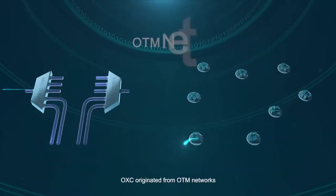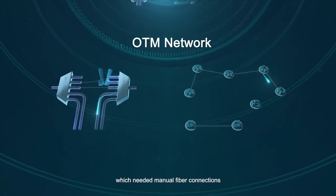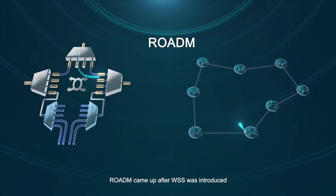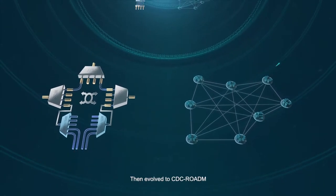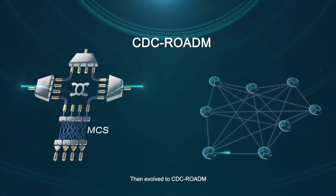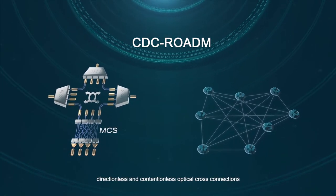OXC originated from OTM networks which needed manual fiber connections. ROADM came up after WSS was introduced, helping build a mesh network, then evolved to CDC ROADM, implementing colorless, directionless and contentionless optical cross connections.